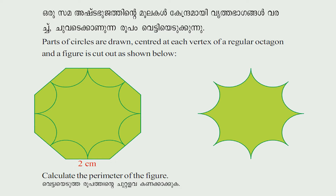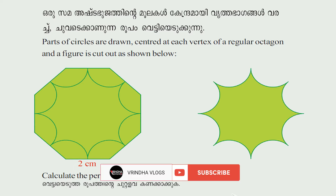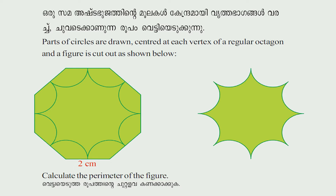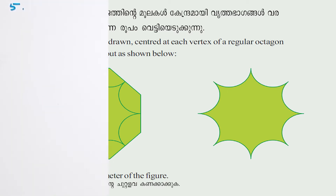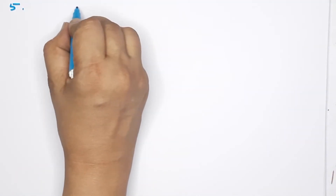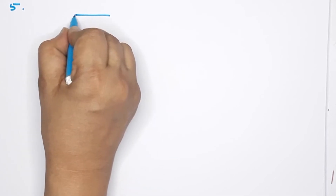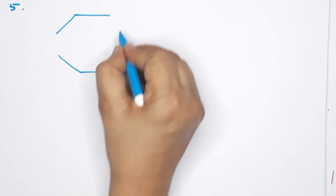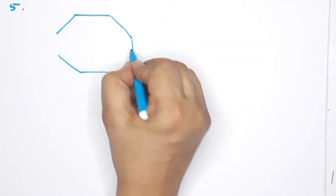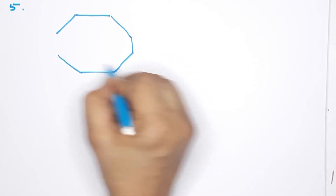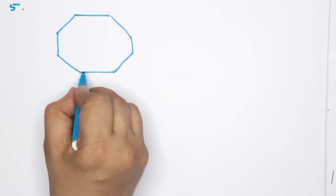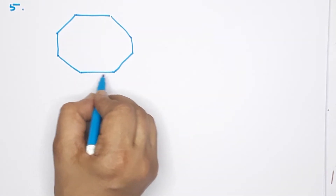Next question: Parts of a circle are drawn centered at each vertex of a regular octagon, and a figure is cut out as shown. Calculate the perimeter of the figure. We have a regular octagon figure — a regular octagon where all sides are equal.